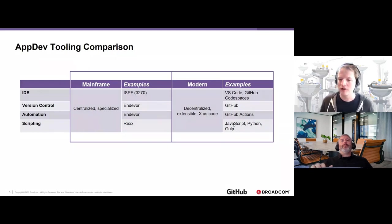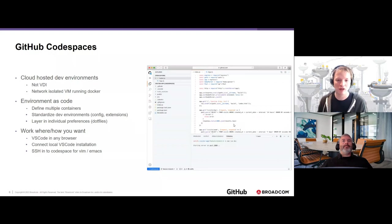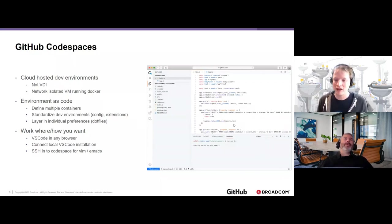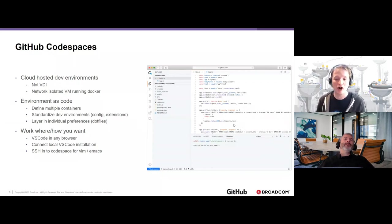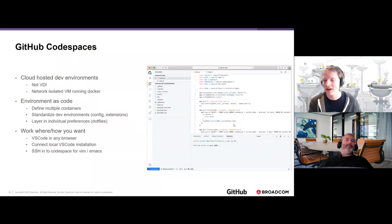GitHub Codespaces is a cloud-hosted developer environment — not a VDI, not a desktop you remote into. It's a network-isolated VM that spins up, runs Docker, and can run one or more containers, giving you an entire developer environment hosted in the cloud. You can use a browser connected to VS Code with all your extensions — including those necessary for mainframe code like the Zoe extensions, and COBOL code completion and syntax highlighting. You can define all of that as code so every developer who needs to maintain that application gets the same standardized environment with the same extensions and configurations.